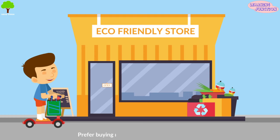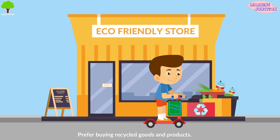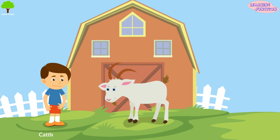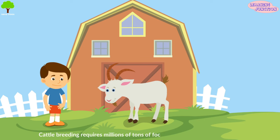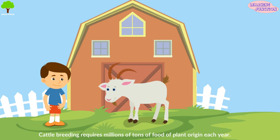Prefer buying recycled goods and products. A recycling icon on the product means it was made from renewable resources. Cattle breeding requires millions of tons of food of plant origin each year, so avoid eating meat and save plants easily.